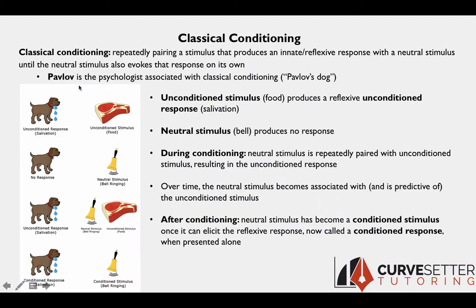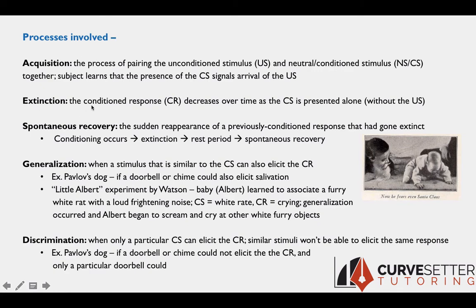Extinction: during conditioning, the animal or human learns that the conditioned stimulus signals the arrival of the unconditioned stimulus — the bell signals arrival of the steak. But if after conditioning the bell is presented alone time and time again, the animal will begin to learn that the bell doesn't always signal arrival of the food. Extinction is the extinction of the conditioned response — it decreases gradually over time if the CS is continually presented alone, without the unconditioned stimulus.